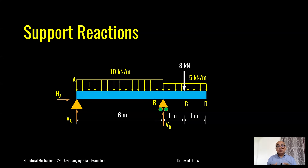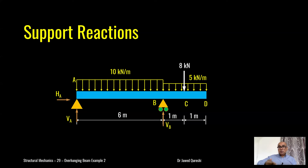Our first step is to find out reactions. On the left side I have a pin support which will have two reactions: horizontal and vertical. On the right side I have a roller support at B which will only have one reaction, which is a vertical reaction. A pin support can be thought of as a door which can rotate but cannot move upward or horizontally — that's the reason we have two reactions: horizontal and vertical.